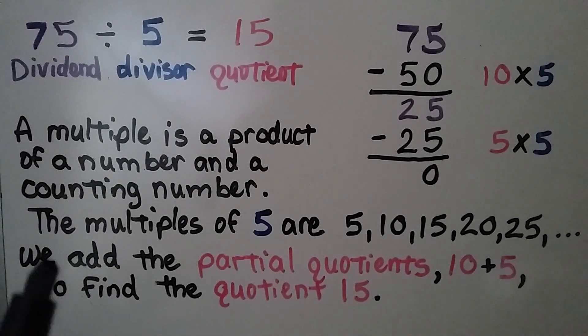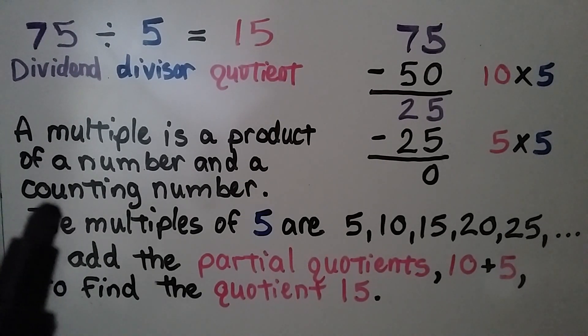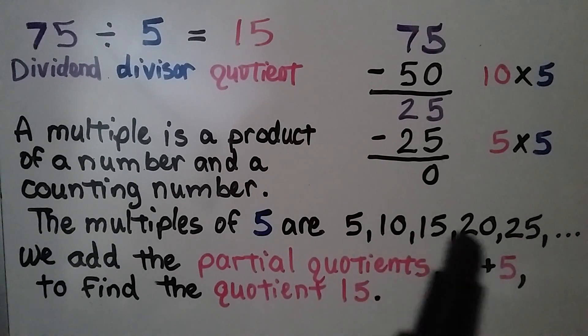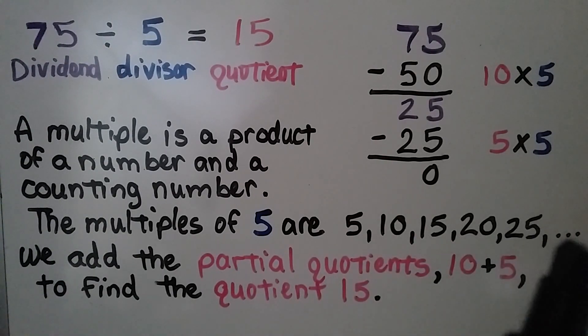Remember that a multiple is a product of a number and a counting number. So the multiples of 5 are like 5, 10, 15, 20, 25, and so on.